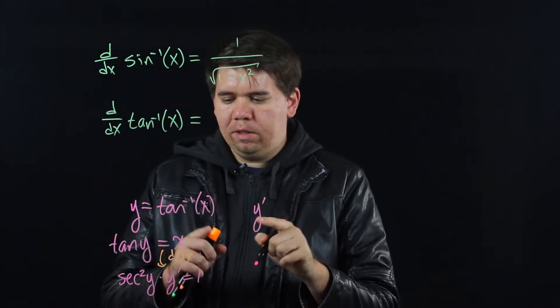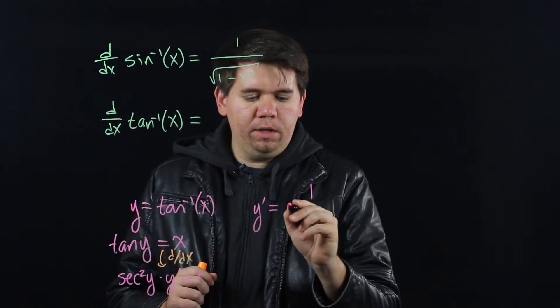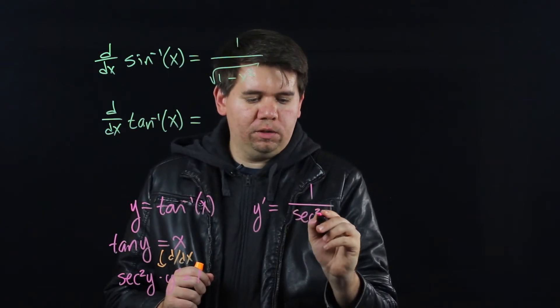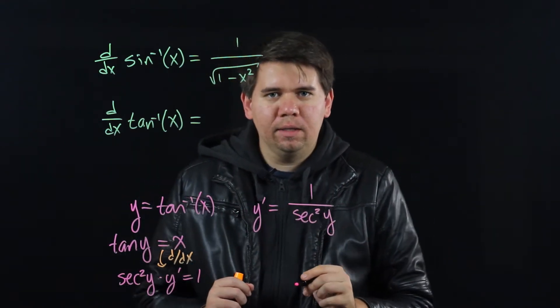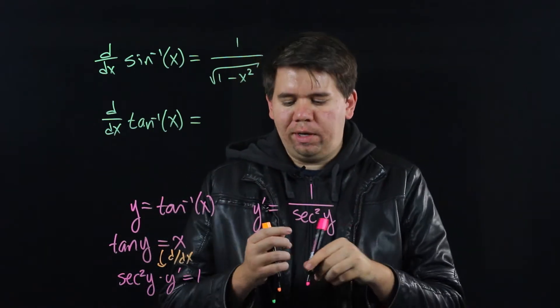Hence, my y prime, the derivative of tan inverse, is just 1 over secant squared of y. But what is secant squared of y?